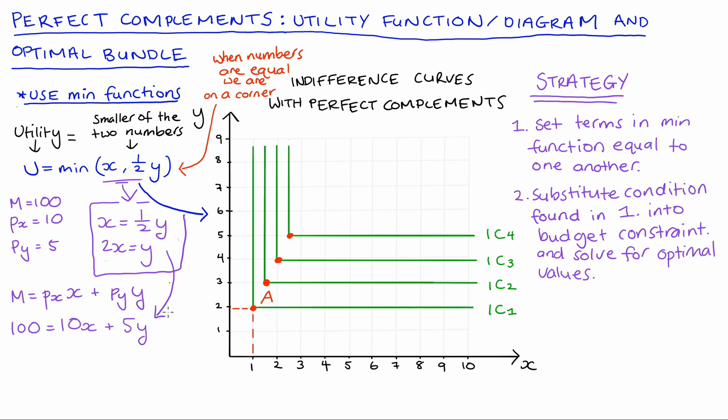We then go to our condition that we found before so 2x equals y. You could also substitute x equals half y, it will come to the same conclusions, but I'm just going to use 2x equals y. So we substitute that into our budget constraint so we get 100 equals 10x plus 5 times, well y equals 2x, so 5 times 2x which is 10x. 10x plus 10x is 20x so we have this condition that 100 equals 20x.